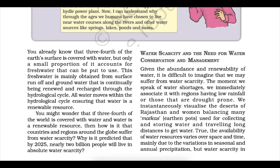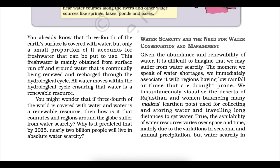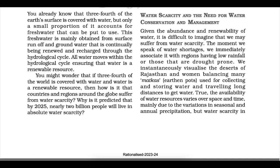All water moves within the hydrological cycle, ensuring that water is a renewable resource. You might wonder: if three-fourths of the world is covered with water and water is a renewable resource, then how is it that countries and regions around the globe suffer from water scarcity? Why is it predicted that by 2025 nearly 2 billion people will live in absolute water scarcity?